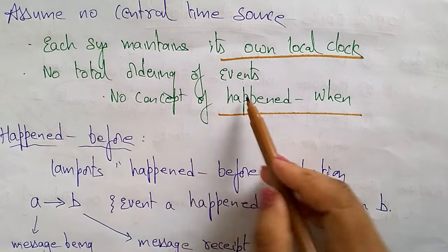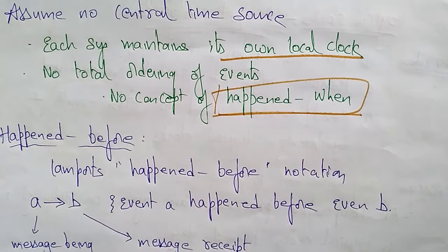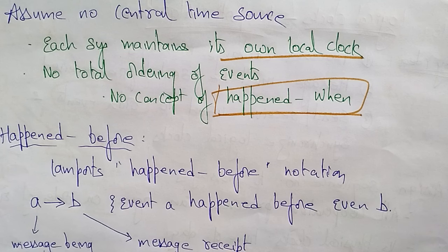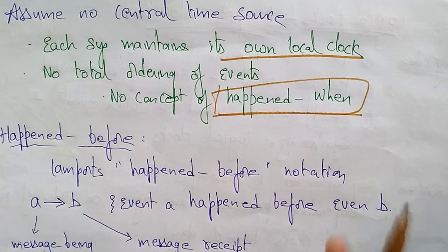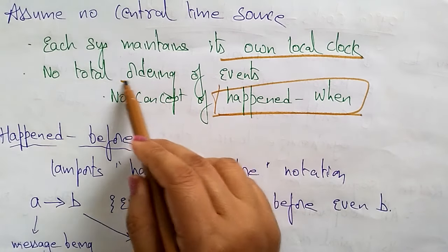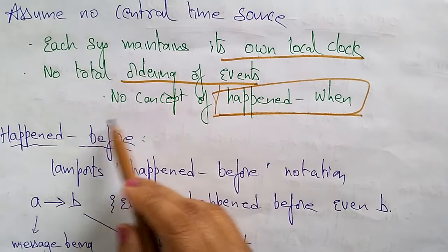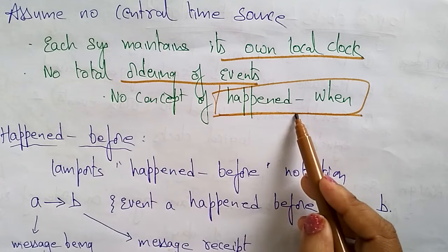Don't bother about when it happened or at what time it happened. Whereas in physical clocks, what time it happened is very important. For that we maintain time synchronization across all systems using different algorithms in physical clocks. But in logical clocks you need to concentrate on the number and total ordering of events — there is no concept of 'happened when.'